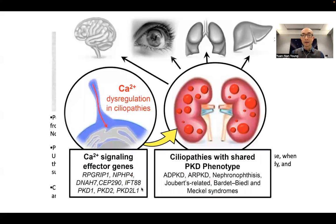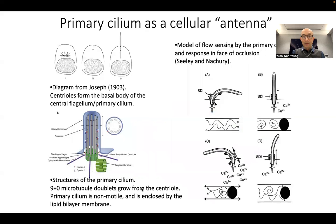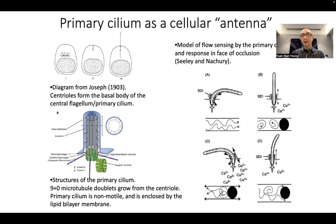When primary cilia are dysfunctional, their pathologies lead to all kinds of diseases such as kidney disease, kidney cysts, liver problems, and retinal dysfunction. The biological function of the primary cilium has not been well established until just recently. Initially it was speculated that, since it doesn't really move and is quite passive, as it bends under external stimuli, there may be mechanosensing followed by messengers such as calcium that transmit a mechanical signal.